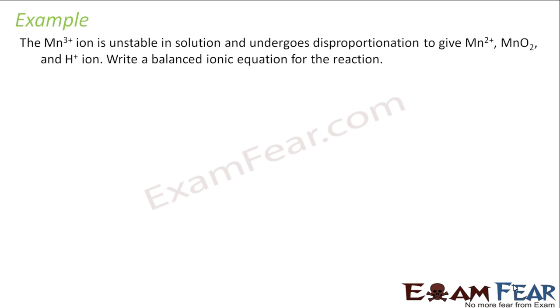So we have one more question. It says that Mn3+ is unstable in solution and undergoes disproportionation to give Mn2+ and MnO2. MnO2 will have Mn plus 4, right? Mn2+ and Mn4+ and H+ ions. We have to write the balanced ionic equation for this reaction.